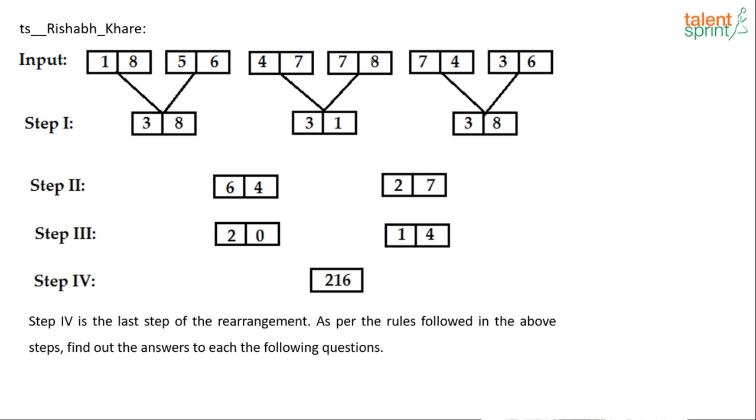Let's look at what happens from input to step one. Input we have got 18, 56, 47, 78, 74, 36. Look at the first step. Step one very clearly shows it is an operation between 18 and 56. Now what operation on 18 and 56 can give you 38? Very clearly, 56 minus 18. The difference of 56 and 18 is 38. Let's see if that satisfies the other parts also. 78 difference 47, or 78 minus 47, yes, is 31. And here 36 difference 74 or 74 difference 36 is 38. So step one is very clear. What is happening in step one? We are taking the difference of the numbers.